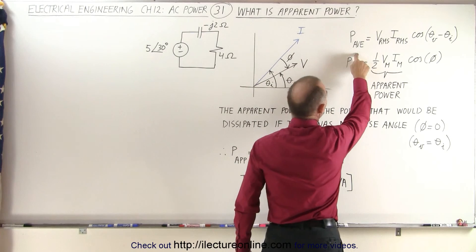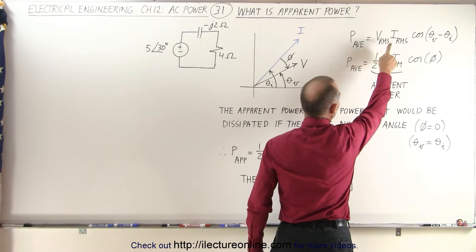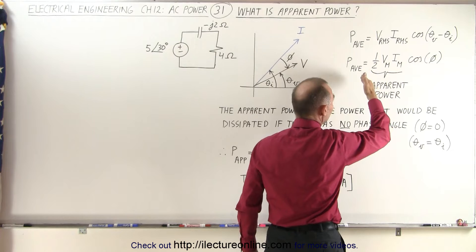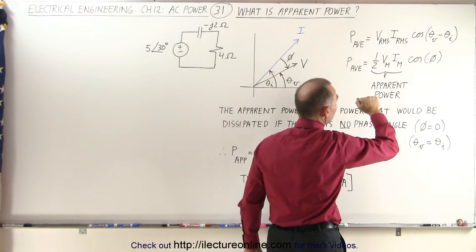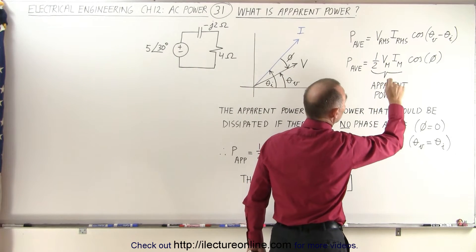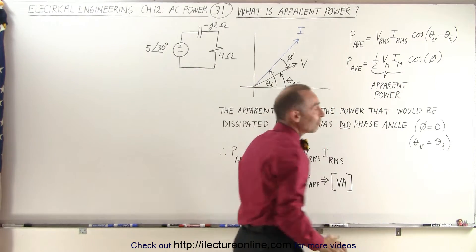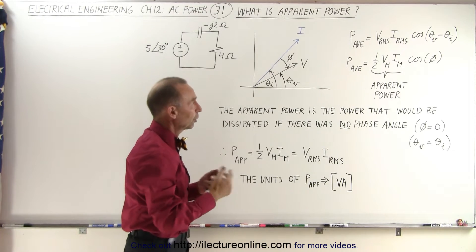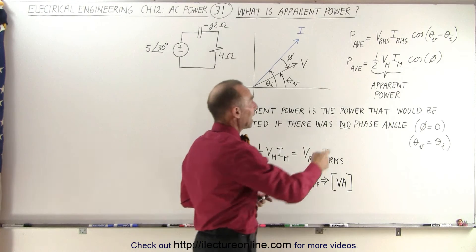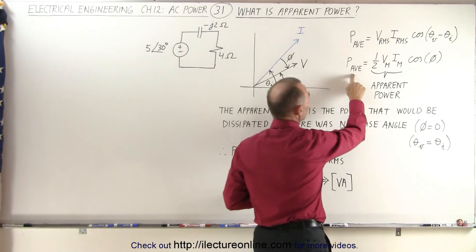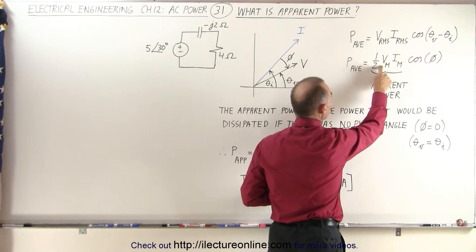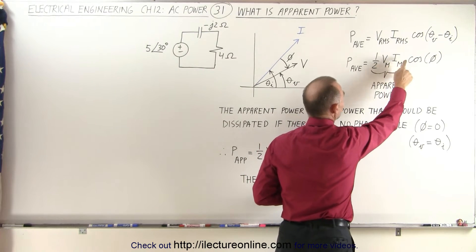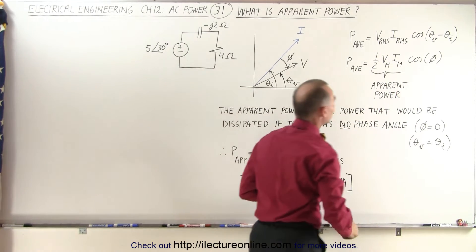The average power is equal to Vrms times Irms — the root mean square voltage times the root mean square current — times the cosine of the phase angle between the voltage and the current. In other words, the average power can also be defined as one-half the maximum voltage times the maximum current times the cosine of the phase angle.